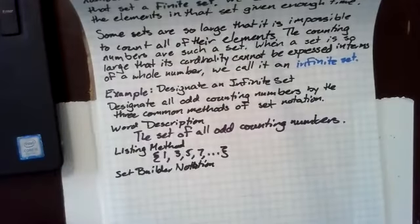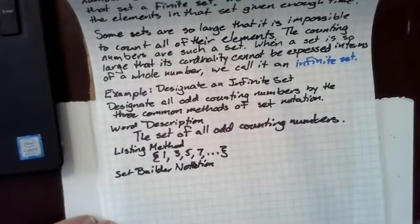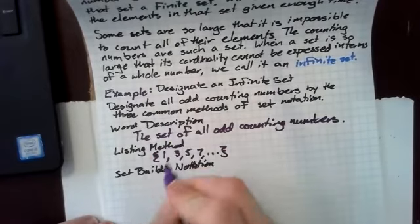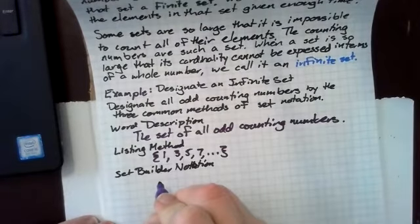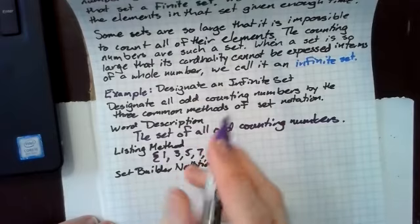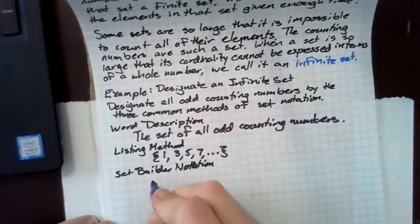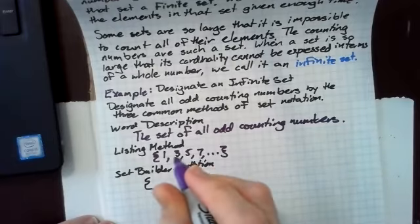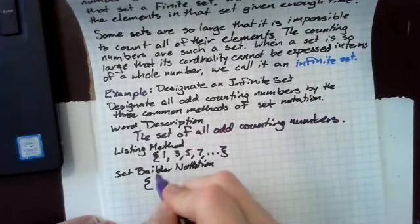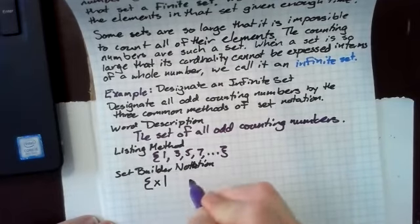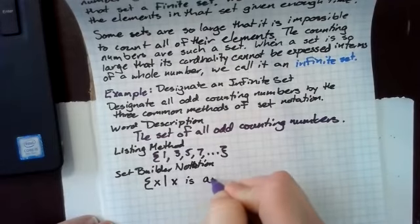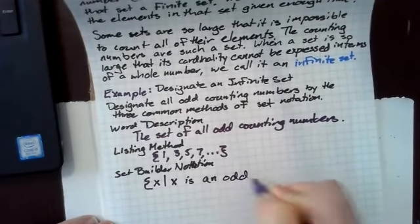Finally, we want to do this in set builder notation. There are a couple ways to do this, and the easiest way is to write that this is the set of X such that X is an odd counting number.